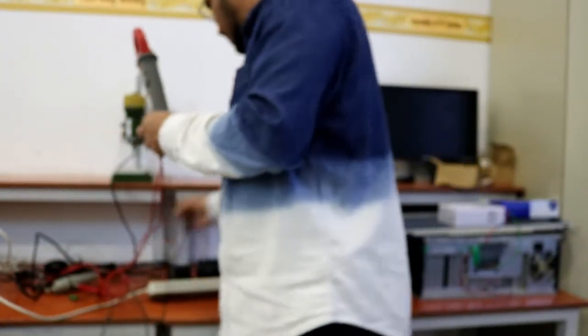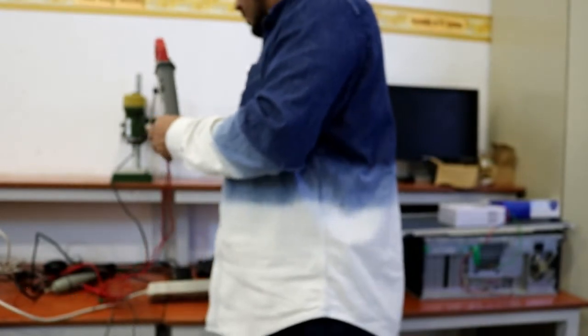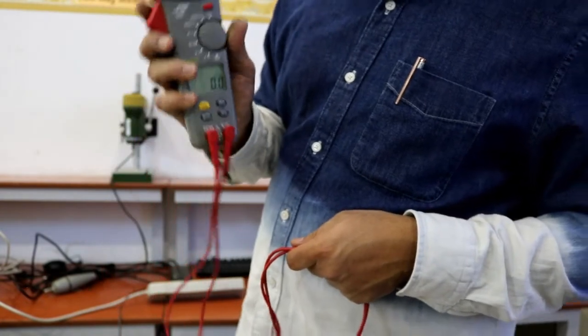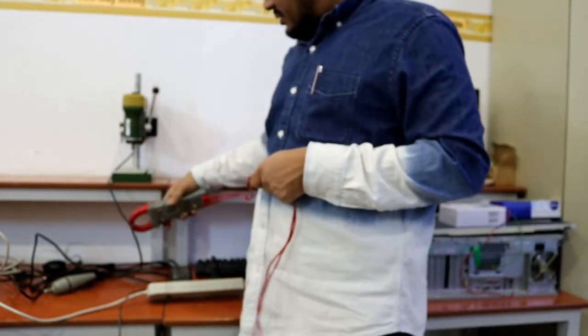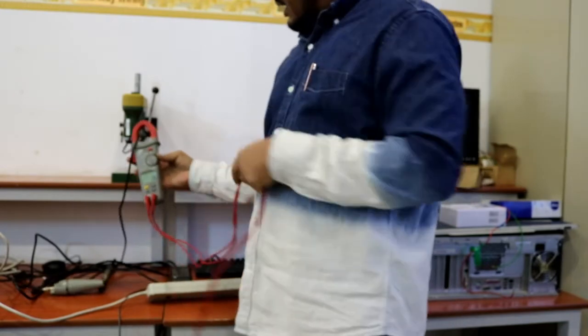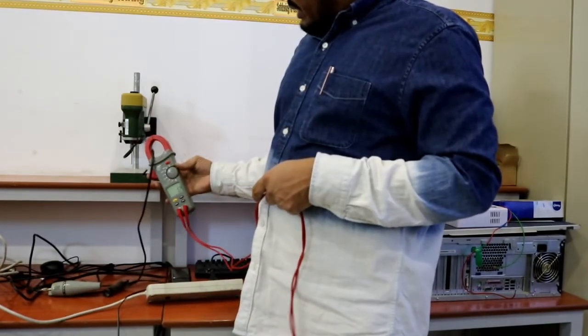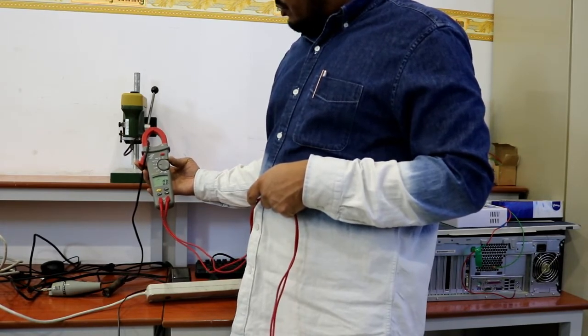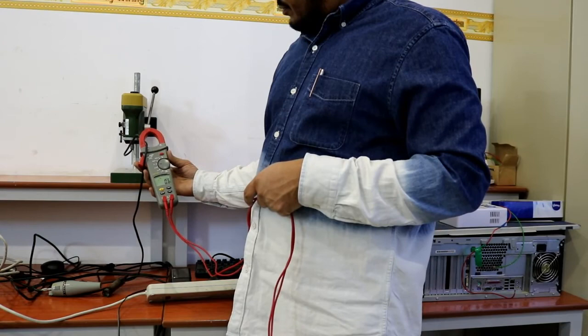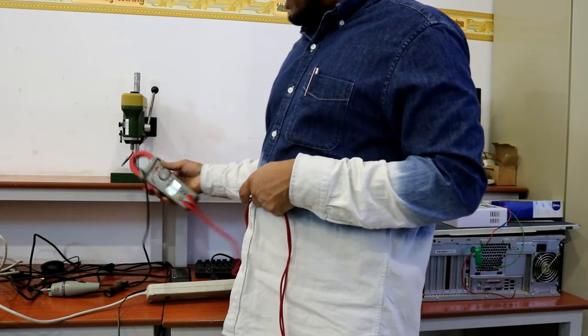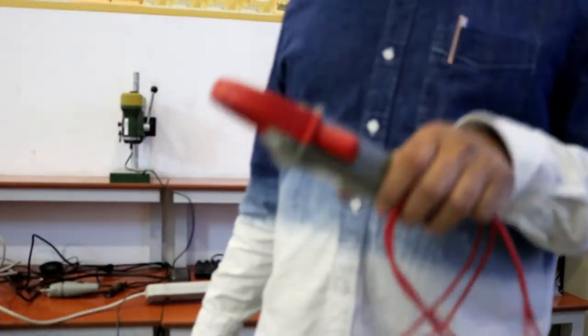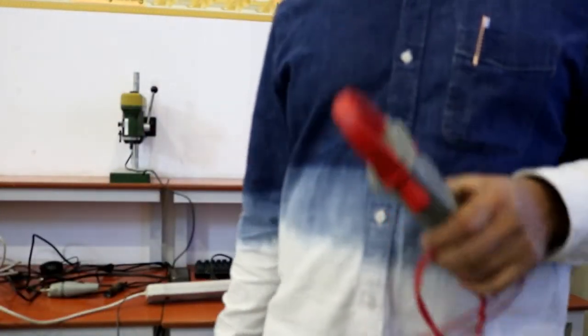So like this, we can measure current also. For current, I will just switch on and keep it in AC current. AC current we can keep here. Just switch on this and you can measure. You can put the clamp, open the clamp and keep the wire. So it is 1 ampere almost now. It is decreasing. It is going to up to 0.2 ampere. Yeah, it is 0.6 ampere continuously. So half ampere it is taking. So like this we can measure DC current also. And frequency also we can measure.